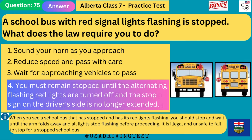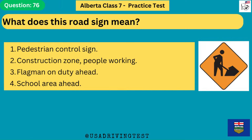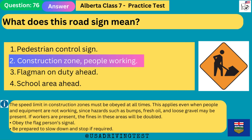What does this road sign mean? 1. Pedestrian control sign. 2. Construction zone, people working. 3. Flag man on duty ahead. 4. School area ahead. The answer is 2: construction zone, people working. The speed limit in construction zones must be obeyed at all times, even when people and equipment are not working, since hazards such as bumps, fresh oil, and loose gravel may be present. If workers are present, fines in these areas will be doubled. Obey the flag person's signal and be prepared to slow down and stop if required.